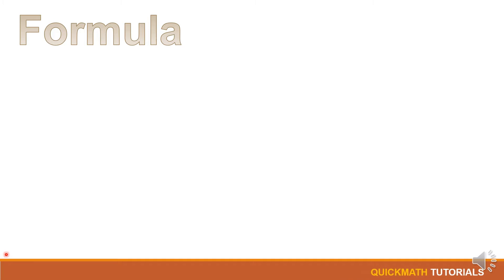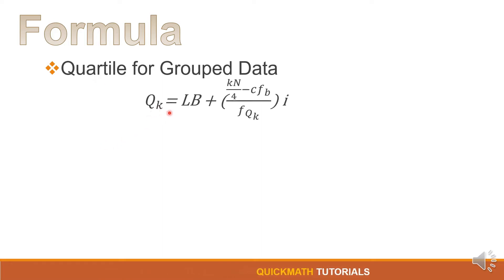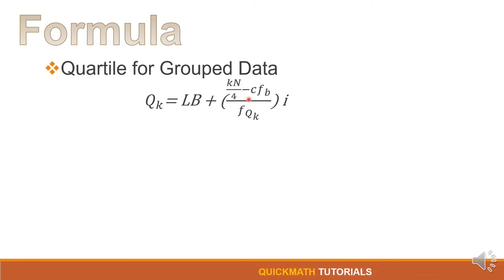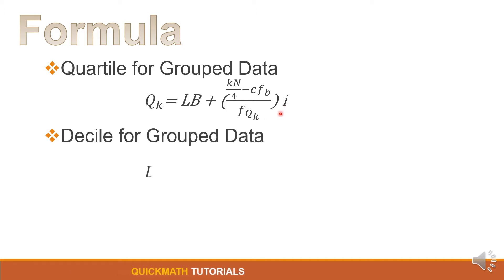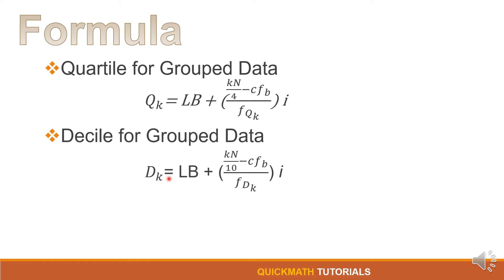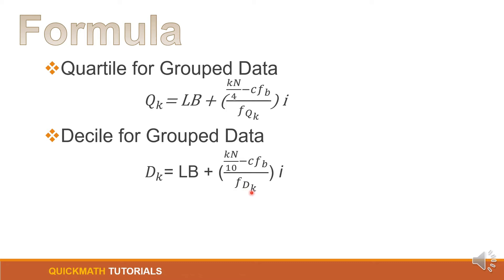Here are the formulas to be used in solving for the measures of position for grouped data. First, we have quartile: Q sub k is equal to Lb plus k times n over 4, minus cf sub b, over f sub Q sub k, times i. For the decile, we have D sub k is equal to Lb plus k times n over 10, minus cf sub b, over f sub D sub k, times i.